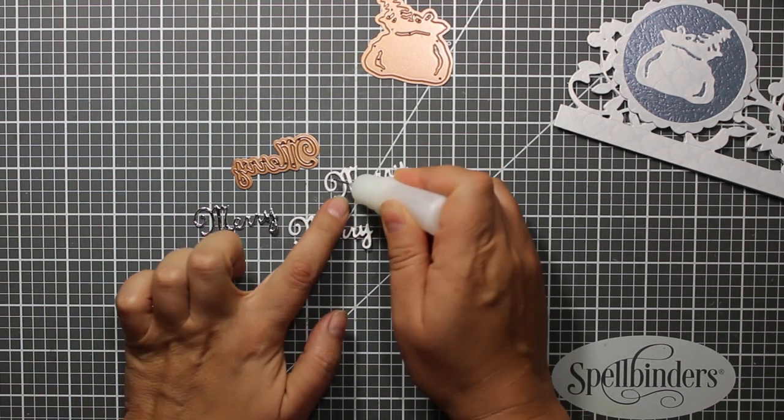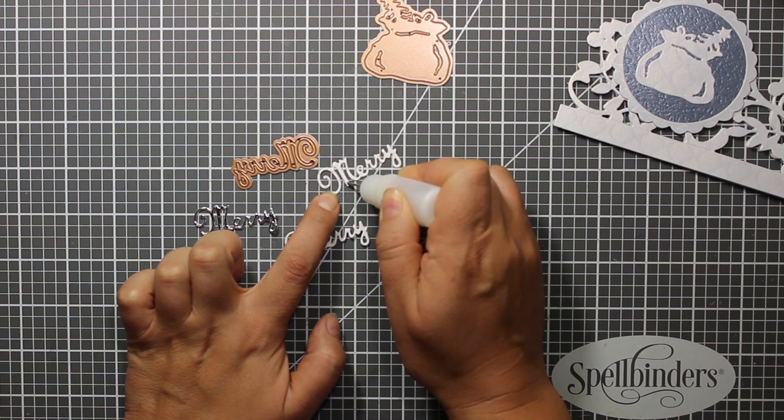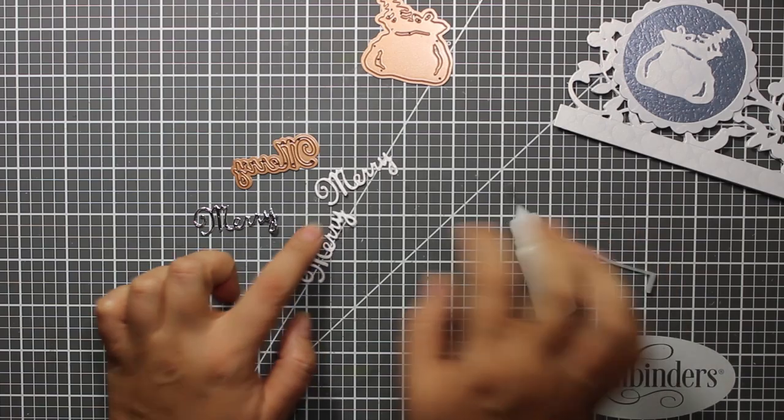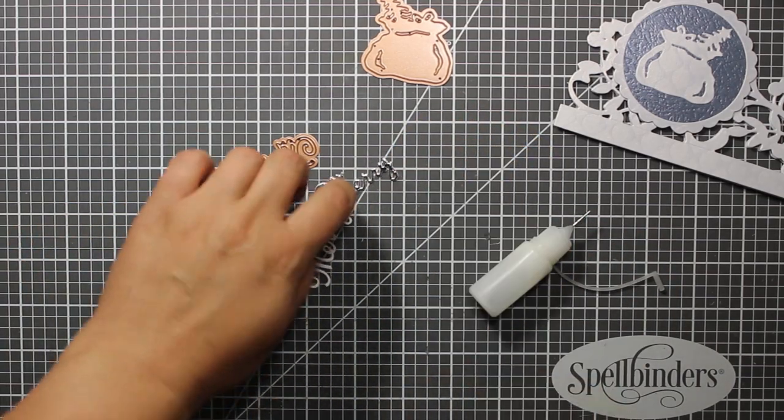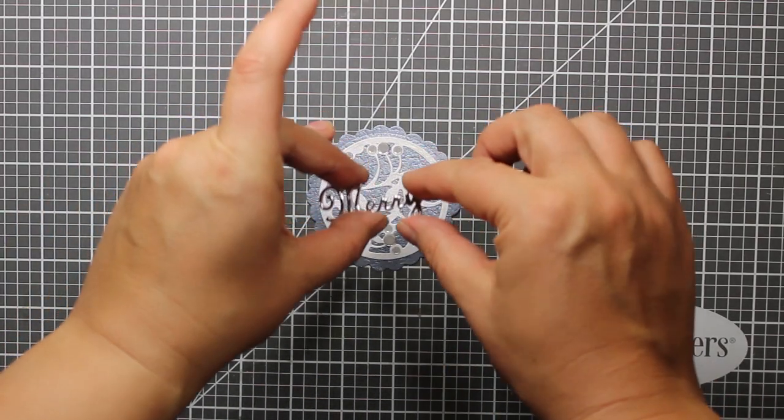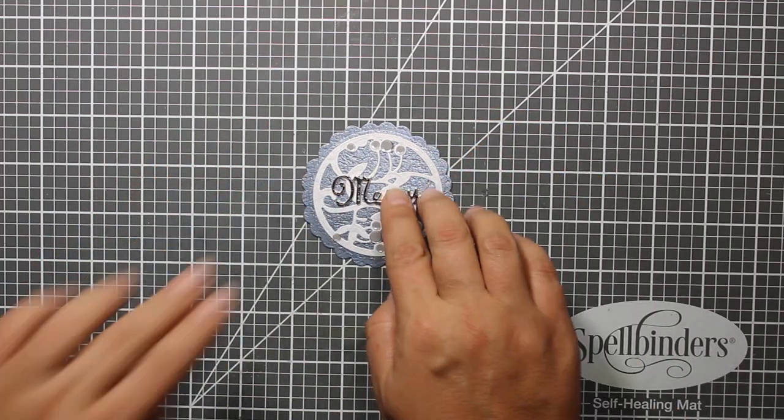This merry die is from the same set that the sack comes from. I'm layering three die cuts to create more dimension, the topmost one being die cut of silver mirror cardstock. You can see that I have already attached the sequins for the berries and now I'm adding the sentiment in the center.